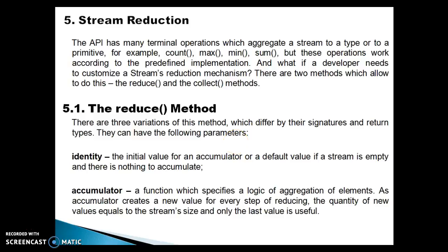Hello friends, this is Kishan and welcome to this video tutorial. In this video tutorial we are going to discuss about the stream reduction property, or stream reduction operation. The API has many terminal operations which aggregate a stream to a type or to a primitive — for example, count, max, mean, sum. These are the API, but these operations work according to predefined implementation. What if a developer needs to customize a stream reduction mechanism?